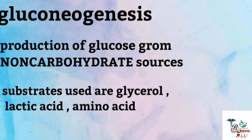Glucose comes from carbohydrates. A complex carbohydrate breaks down into simple glucose. In gluconeogenesis, glucose is produced from non-carbohydrate sources like glycerol, lactic acid, or amino acids.